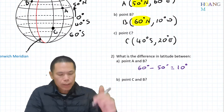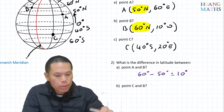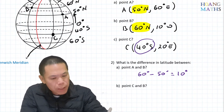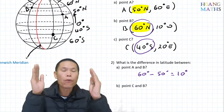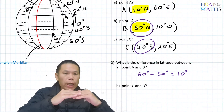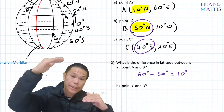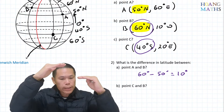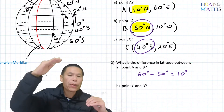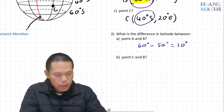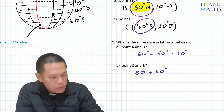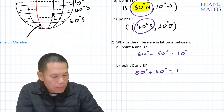Now the latitude difference between point C and B. Point C is 40 degrees south and B is 60 degrees north — one is above the equator, one is below. So we add them together: from zero to 60 degrees north is 60 degrees, then going down 40 degrees south. Altogether that is 100 degrees. When one is north and one is south, we add them — 60 plus 40 equals 100 degrees difference.